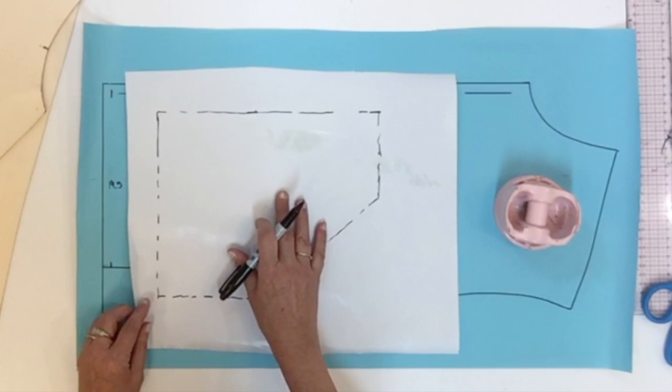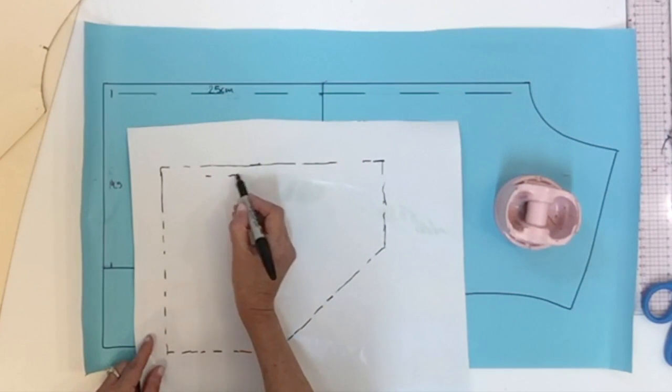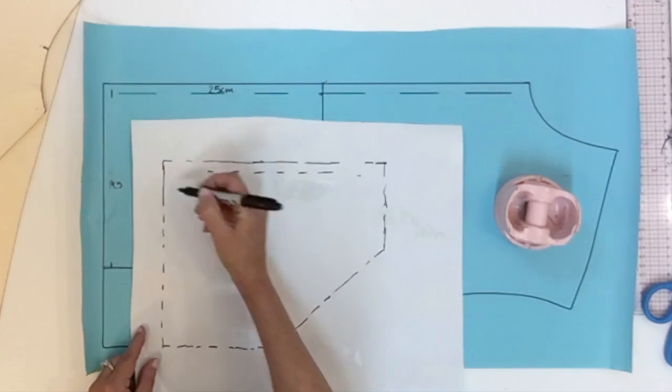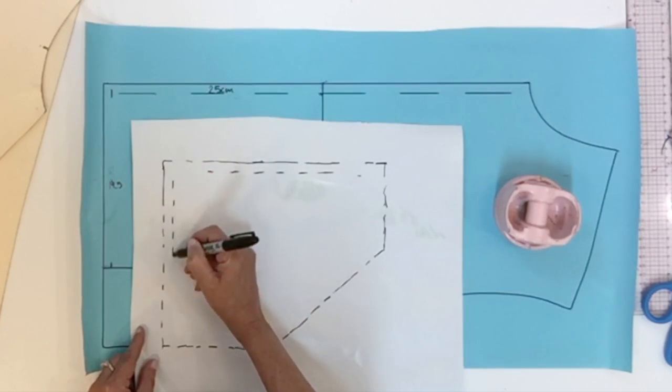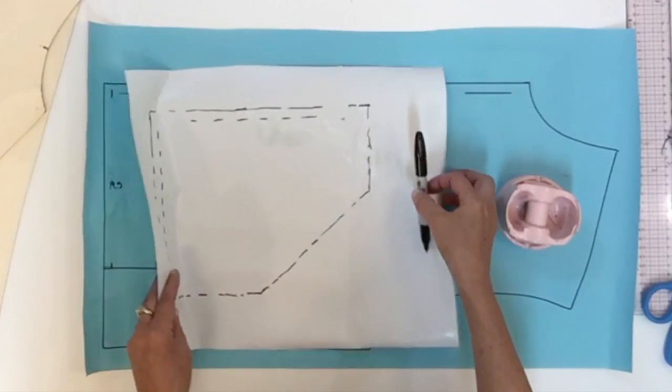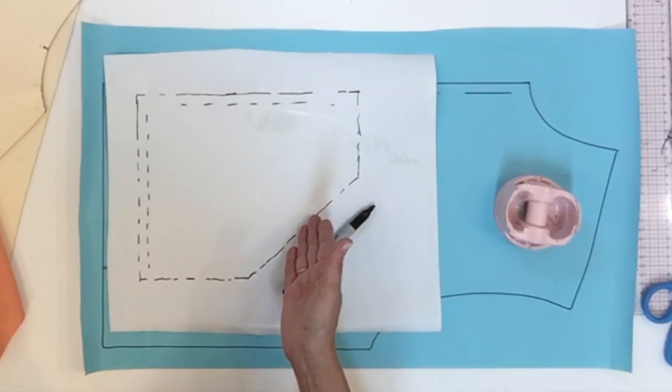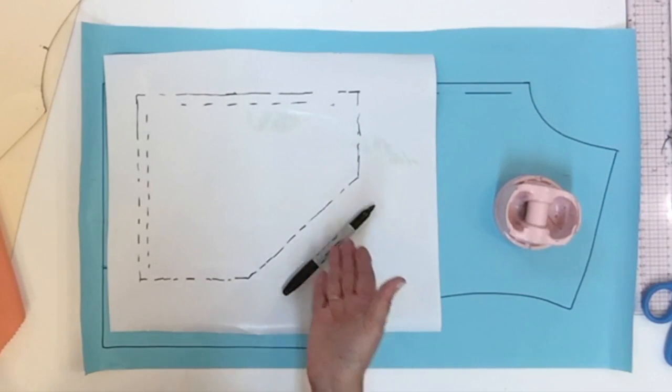Here's the traced pocket. Now you remember that we already have the seam allowance at the center front and also at the bottom. The side area and the top area of the pocket need seam allowance since they're new lines that we did on the front.